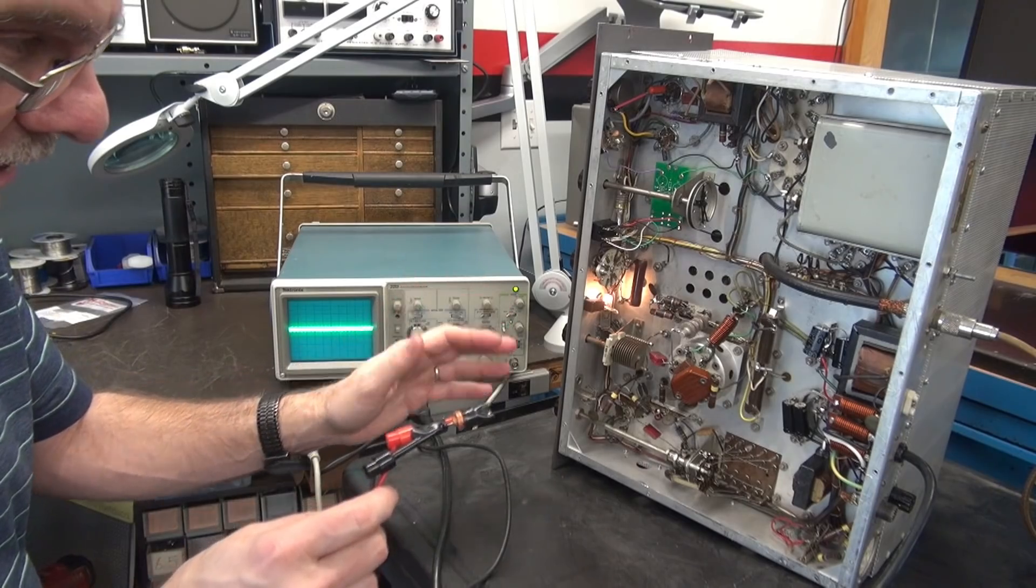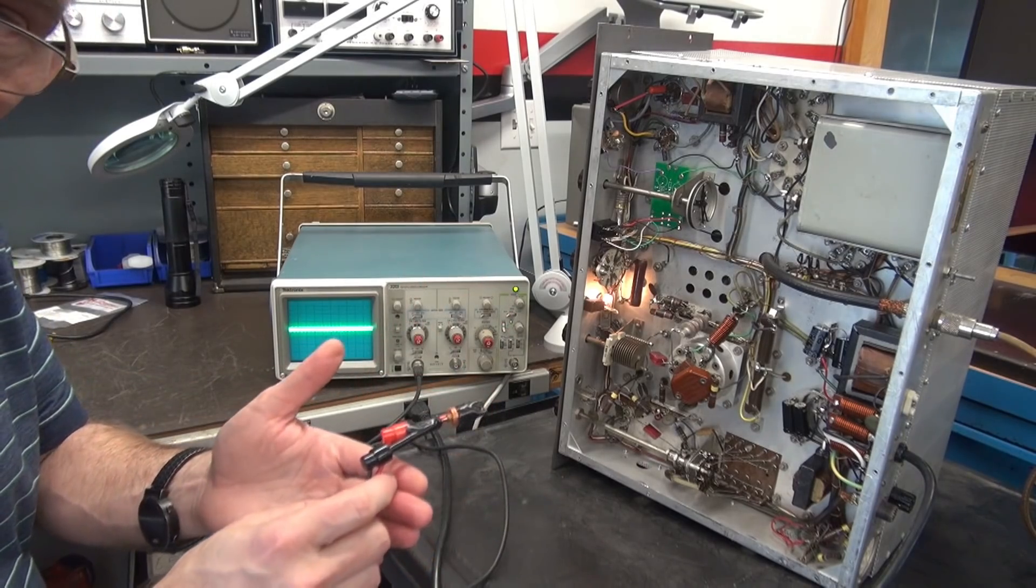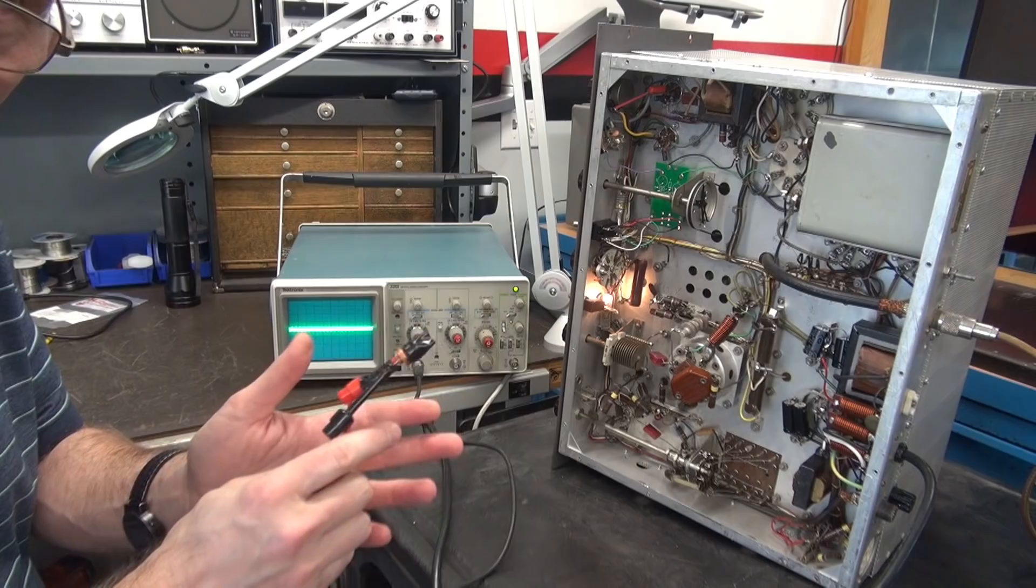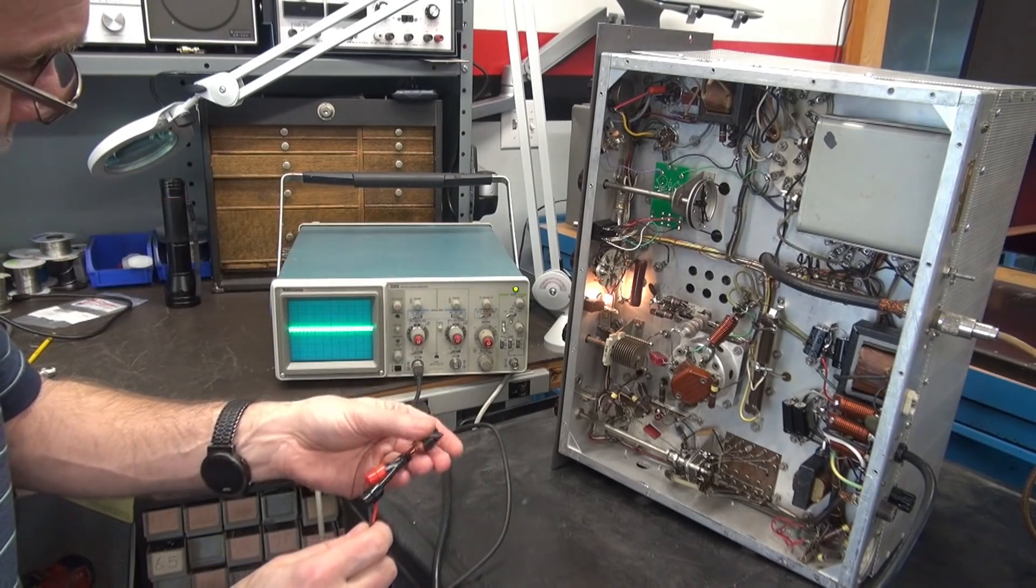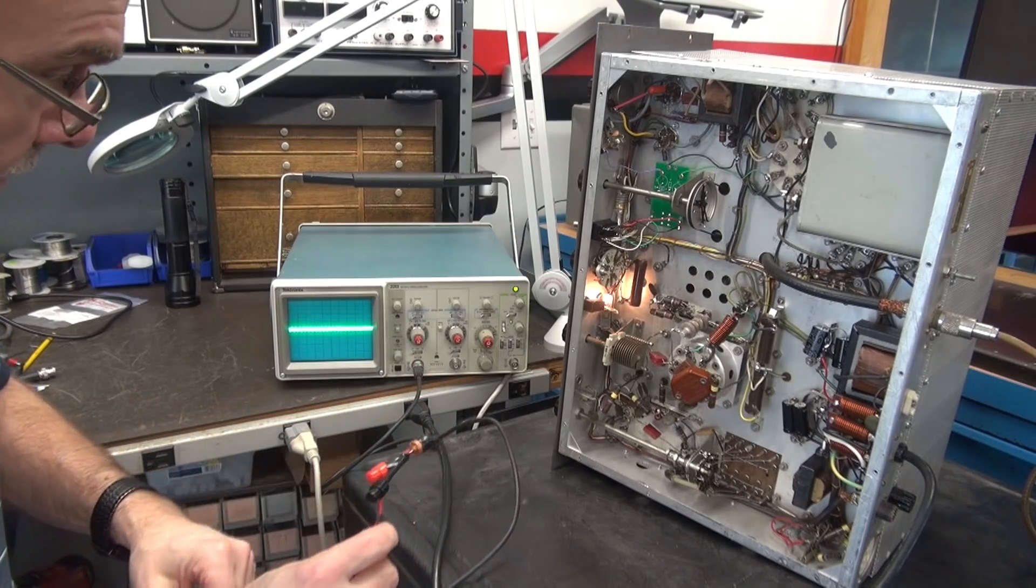Viking 1 is fired up. There is no crystal installed. The VFO is not installed either. And I have my scope set up to watch the noise across the coil. Alright?